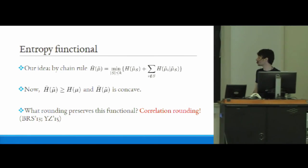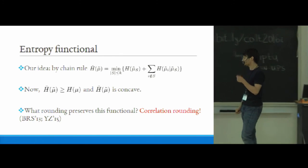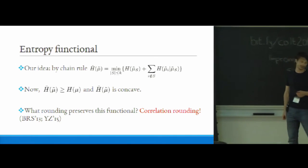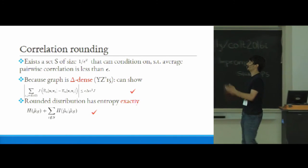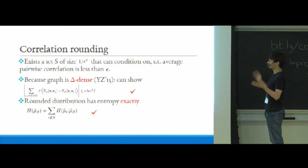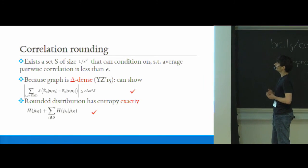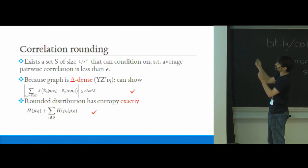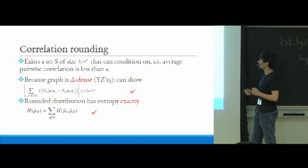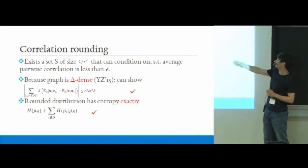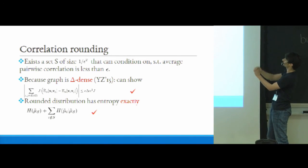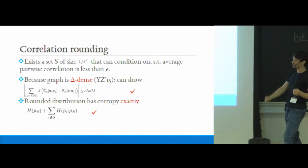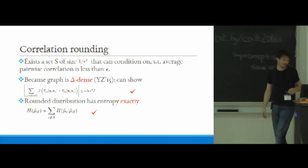So now you have to worry about what rounding actually preserves this function. It turns out there's a natural candidate for this as well, which is correlation rounding, and which was basically first proposed by Barak, Raghavendra, and Steurer in the context of unique games, and then it was also used by Yoshida and Zhou in some other context. But basically the idea is that what it says is that you can find a subset S of size 1 over ε² such that you can condition on it, and then the average pairwise correlation of the rest of the nodes conditioned on this is less than ε. Using this you can show that when the graph is dense, the energy functional is preserved up to an additive factor of εδn²J. But now bear in mind what does the distribution do? It takes a set S and then rounds it according to its local distribution. Everything else is independent based on that. So basically you're exactly matching the pseudo entropy functional that you just came up with. So this basically more or less finishes the proof.